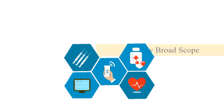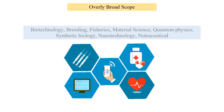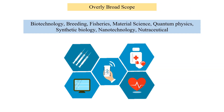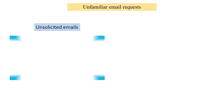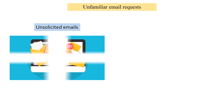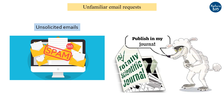Predatory journals may have an overly broad scope that covers many unrelated fields or topics. If you receive unsolicited emails from an unknown or unfamiliar journal asking for submission of your research and promising quick publication, it can certainly be a predatory journal.